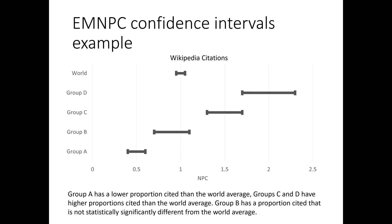Here's a graph showing a comparison of the world and four groups. The world has a confidence interval centered around one. When the confidence intervals don't overlap, we have statistical evidence that one score is higher than the other. For example, groups D and C have statistically significantly higher proportions cited than the world average, group A has a statistically significantly lower proportion cited, and group B has a lower proportion but the difference isn't statistically significant.